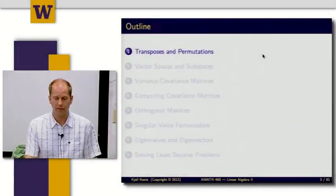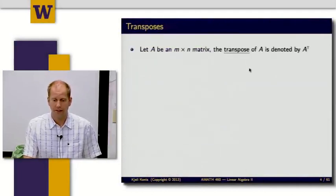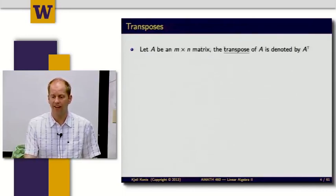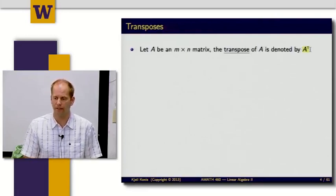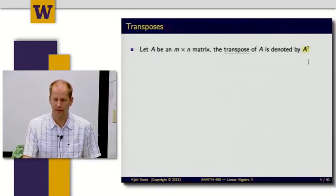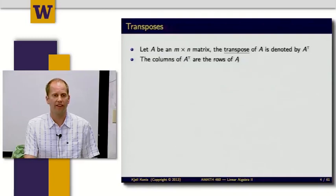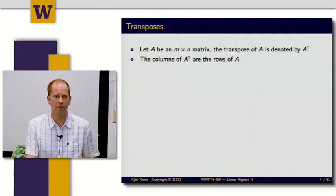Let's let A be an M by N matrix — a matrix with M rows and N columns. I'm going to introduce an operation called the transpose. The transpose of A is denoted by A with a little T superscript. The transpose operation puts the columns of A transpose as the rows of A. So the first row of A becomes the first column of A transpose, the second row becomes the second column, and so on.